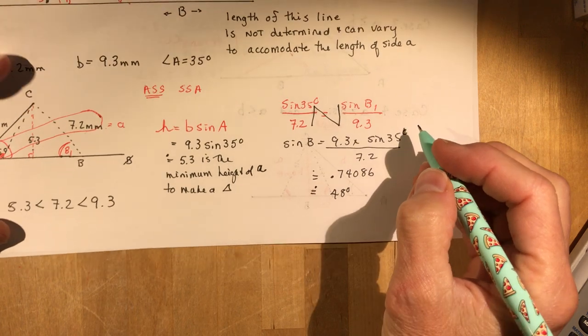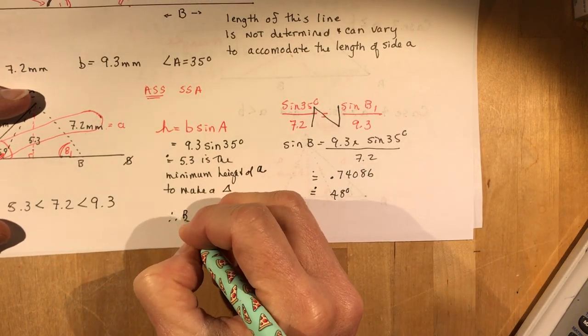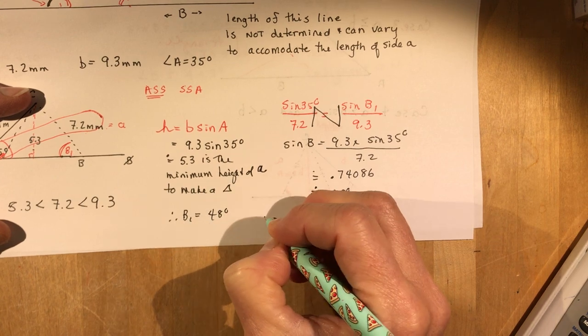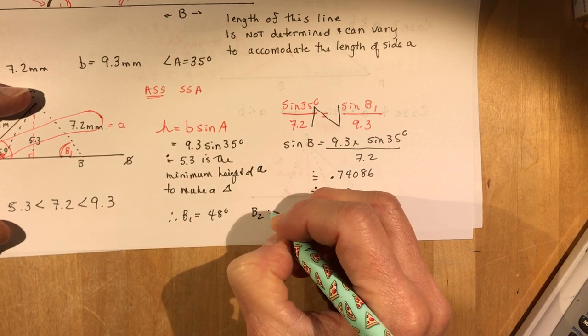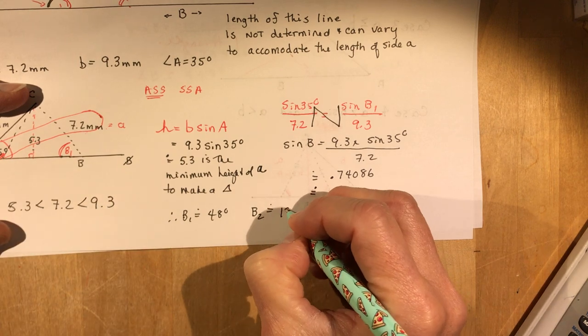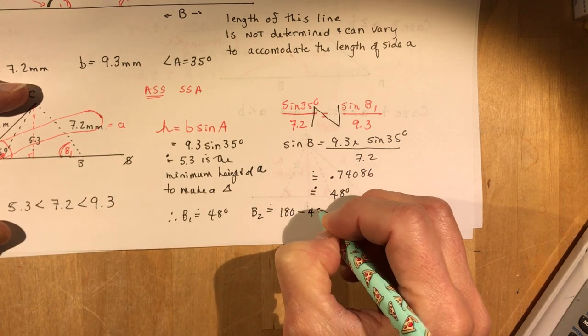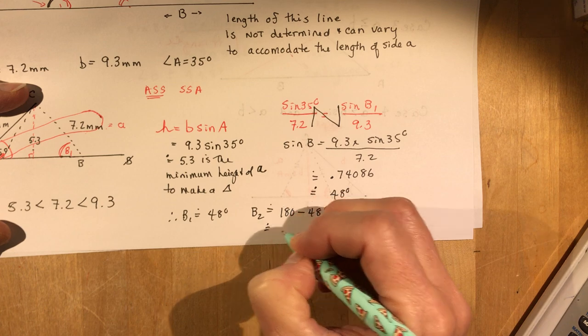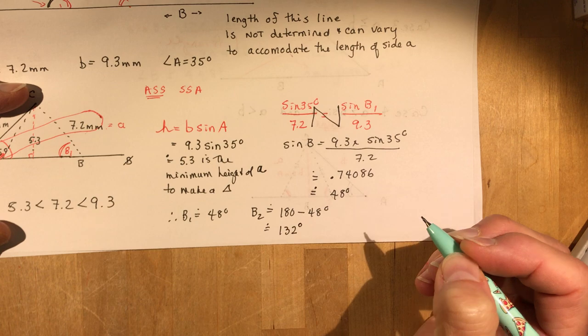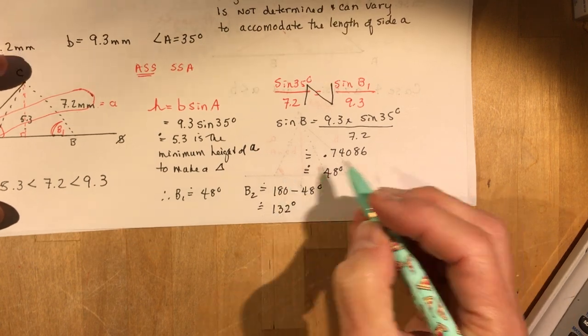So that means B1 is going to be 48 degrees and B2 which would be my other possible angle over here is going to be 180 minus 48, so that's 132 degrees.